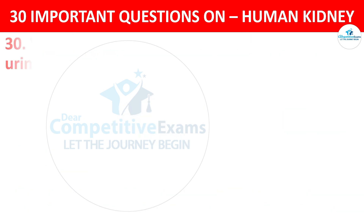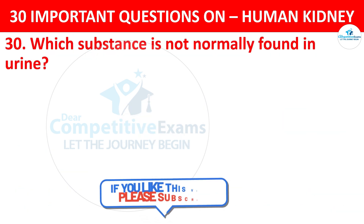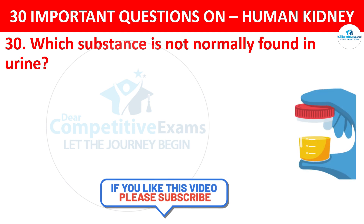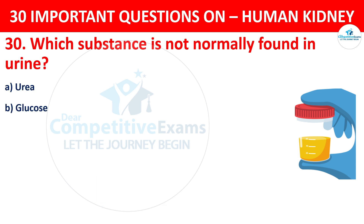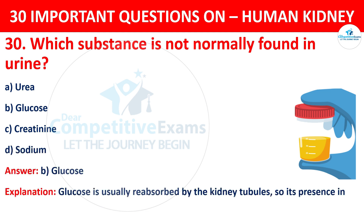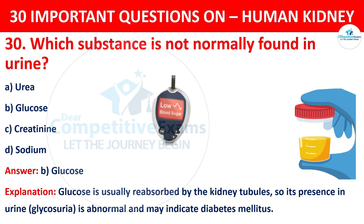Question number 30. Which substance is not normally found in urine? The options are urea, glucose, creatinine, or sodium. The correct answer is B, that is glucose. Glucose is usually reabsorbed by the kidney tubules, so its presence in urine is abnormal and may indicate diabetes mellitus.